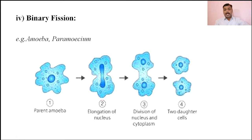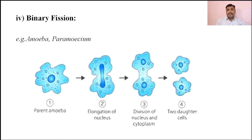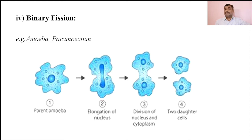In this way, by these four different types of methods generally carried out in primitive members — fragmentation, budding, spore formation (of two types: zoospores and conidiospores), and binary fission — the primitive plants can be reproduced asexually.